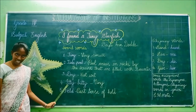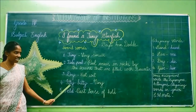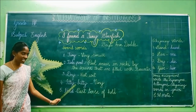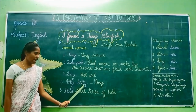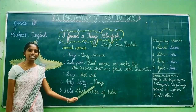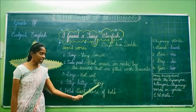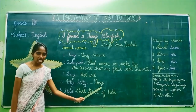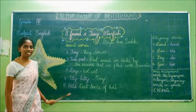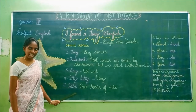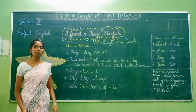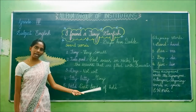Now we are going to see the fourth word: itty bitty. I-T-T-Y, itty, B-I-T-T-Y, bitty. The meaning of itty bitty is tiny, T-I-N-Y. What is the meaning of itty bitty? Tiny. The next word is held. H-E-L-D. Held is the past tense of hold.